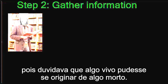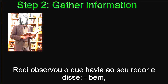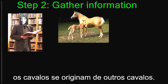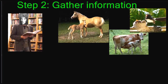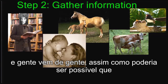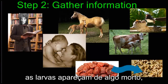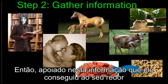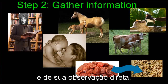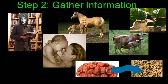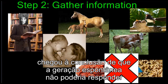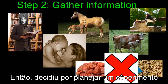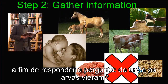He doubted that something alive could come from something dead. He looked around in his environment and noticed that horses come from other horses, cows from cows, birds from birds, and people from people. So how could maggots possibly come from something dead like decaying meat? Based on his observations, he decided that spontaneous generation could definitely not be the answer, and so he was going to design an experiment to answer the question: where do they come from?